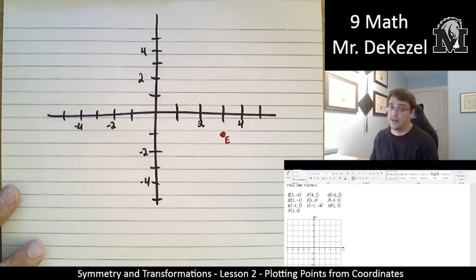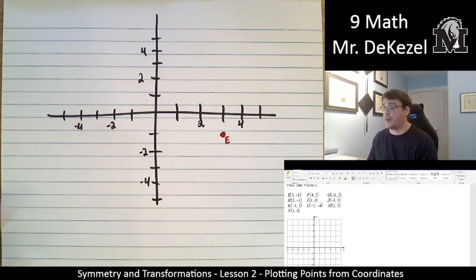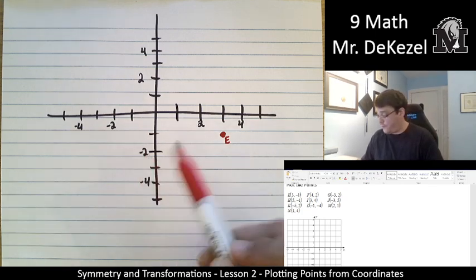And we're going to label that as best we can E. That looks really good. This won't look that good for long, but we'll give it a go. The next point we want to label is F. So we are going to do 4 to the right and 2 up. Positive 4 and positive 2.